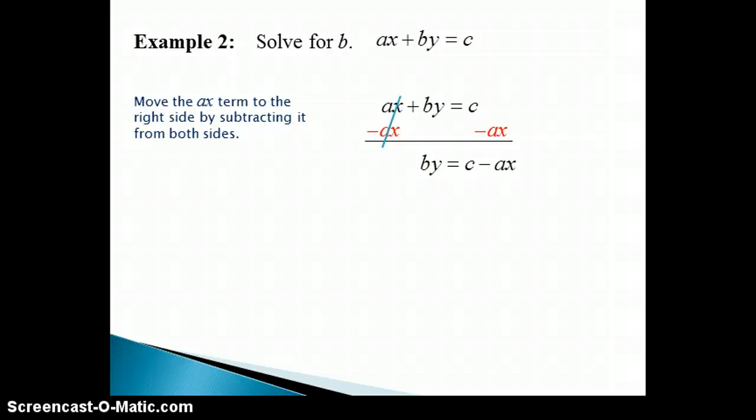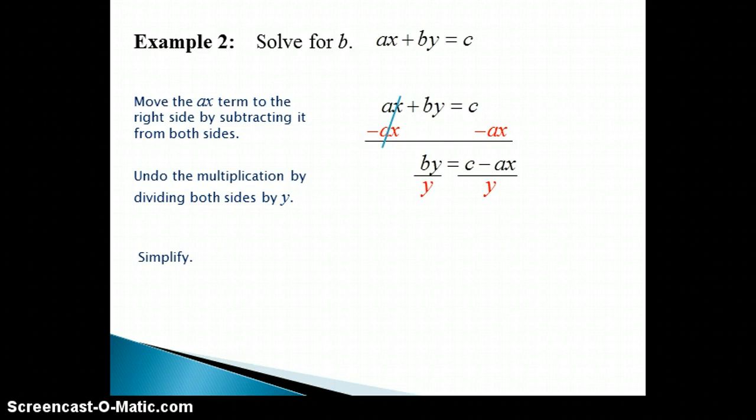Simplifying gives us BY equals C minus AX. The B term is now isolated on one side, so all we have left to do is to isolate the B, which we can do by dividing both sides by Y to undo that multiplication. Simplifying gives us the B all by itself on one side, which is what we wanted. The right side can't be simplified, so our solution is that B is equal to C minus AX all over Y.